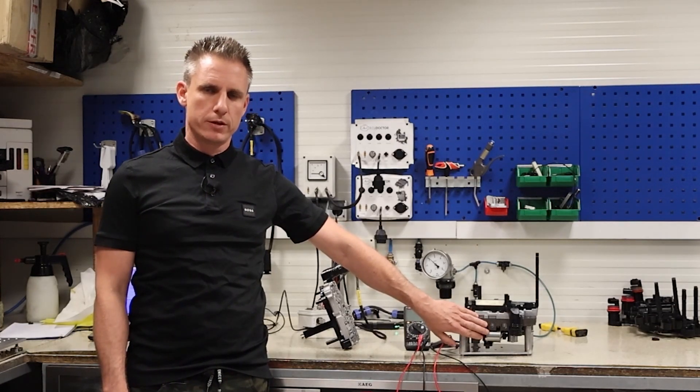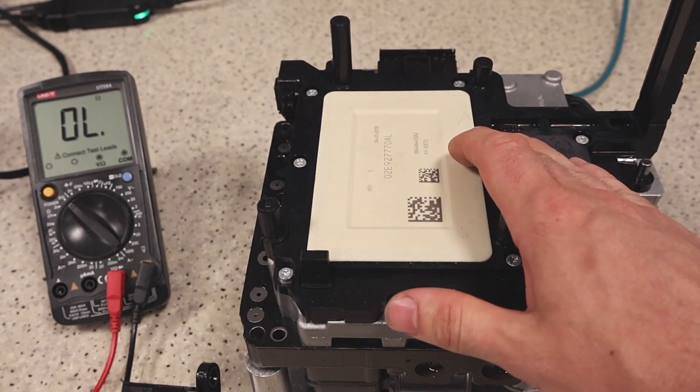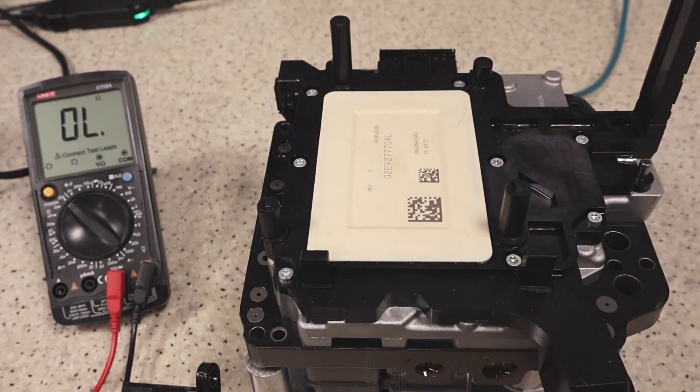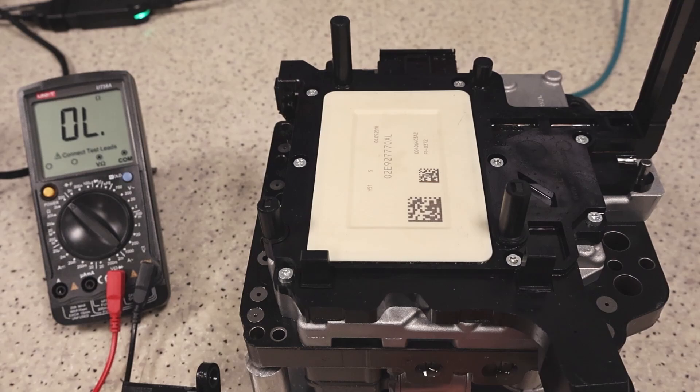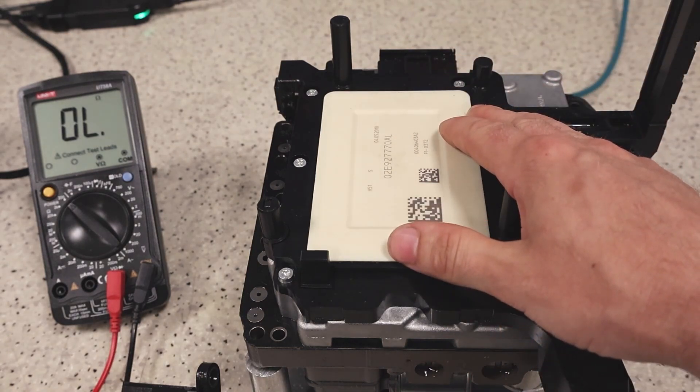We will now take measurements. What does this error tell us? The error tells us that the controller does not see the coil resistance in the valve. Therefore, the tape, the valve coil, or the controller itself could be damaged.